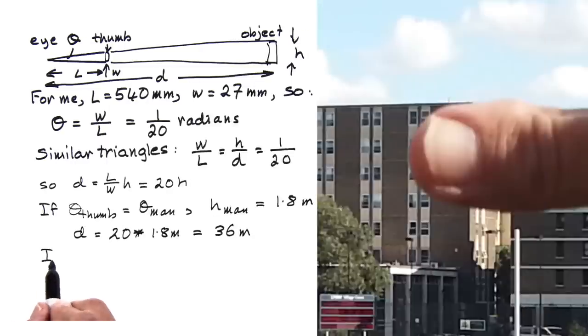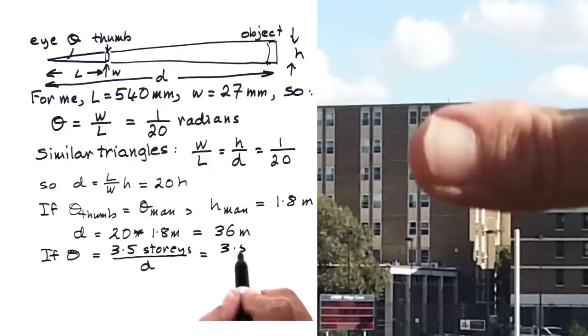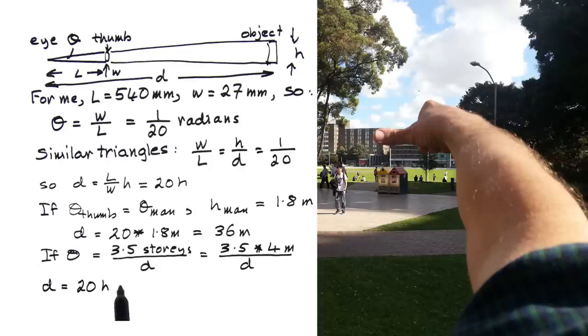We can also use it with fractions. One story of that building is probably about 4 meters high, and 3 and a half stories subtend the same angle as one thumb. So H is 3.5 stories times 4 meters per story. So the building is 20 times 3.5 times 4 equals 280 meters away.